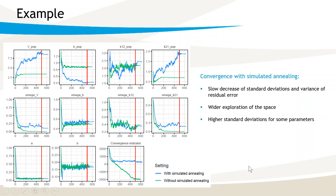Coming back to the first example, another difference that you may have noticed is in the convergence indicator, which shows very different profiles. The convergence indicator will be the topic of another video. For now, just remember that it is not the log-likelihood that I have displayed previously. Due to its definition, if some omega parameters get close to zero, then the convergence indicator also keeps decreasing to a very small value. Keeping high omega parameters then also has the effect of stabilizing the convergence indicator. Finally, since one of the criteria to switch from the exploratory phase to the smoothing phase is the stability of the convergence indicator, this will affect the autostop criteria for the exploratory phase.